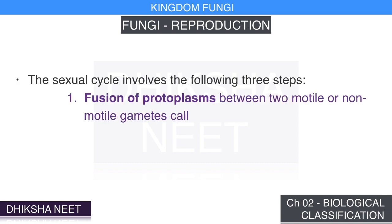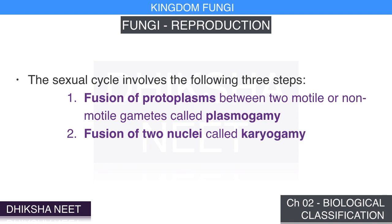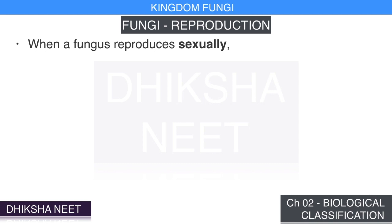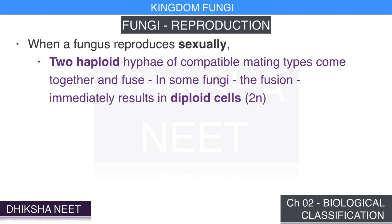The sexual cycle involves three steps: first, fusion of protoplasms between two motile or non-motile gametes, called plasmogamy; second, fusion of two nuclei, called karyogamy; and third, meiosis in the zygote resulting in haploid spores. When a fungus reproduces sexually, two haploid hyphae of compatible mating types come together and fuse. In some fungi, this fusion immediately results in diploid cells.